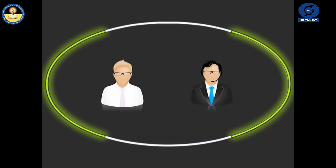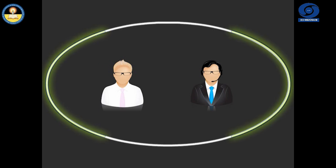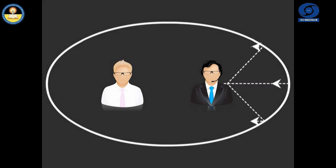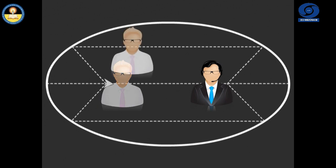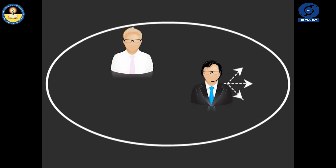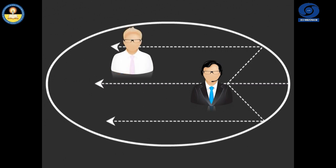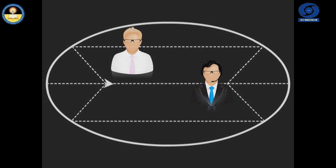Similar to the focusing of light rays with a concave mirror, sound waves can also be focused by concave surfaces. Let's arrange two concave surfaces opposite to each other. If a source of sound is placed at one focus, the sound produced by the source can clearly be heard by a listener only if he is at the other focus.